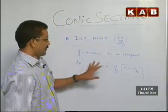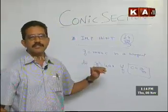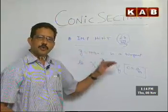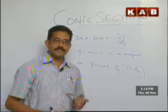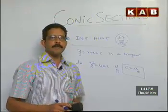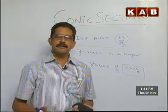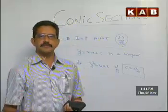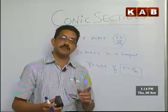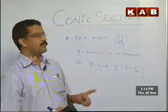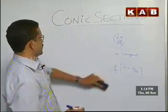Important hint — we earlier mentioned all the conditions for tangent to four curves: ellipse, hyperbola, parabola, and circle. These conditions are very important. In case you are not getting the condition in the exam hall, solve the curve and the line. Discriminant is 0 because a tangent meets the curve only once, therefore discriminant is 0.